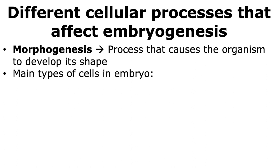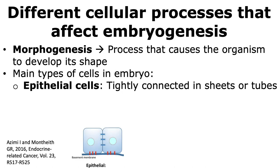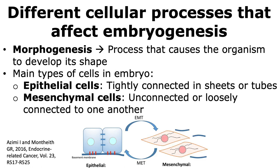There are two main cell types in an embryo. The first are the epithelial cells, which are tightly connected and can form structures like sheets or tubes. The second type are the mesenchymal cells. Mesenchymal cells are not connected to each other, or if they are, they are loosely connected to one another.